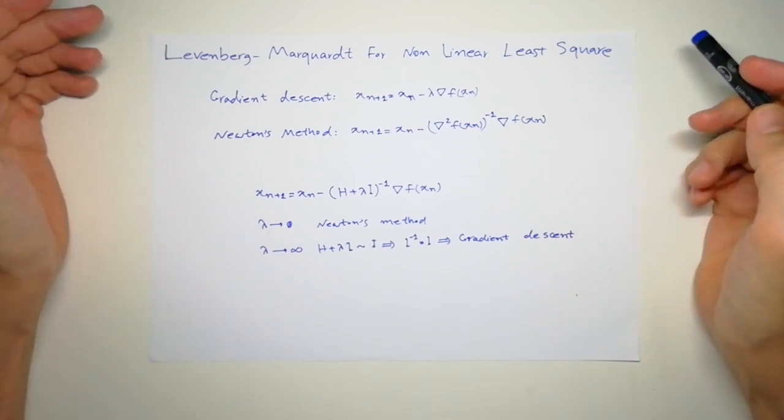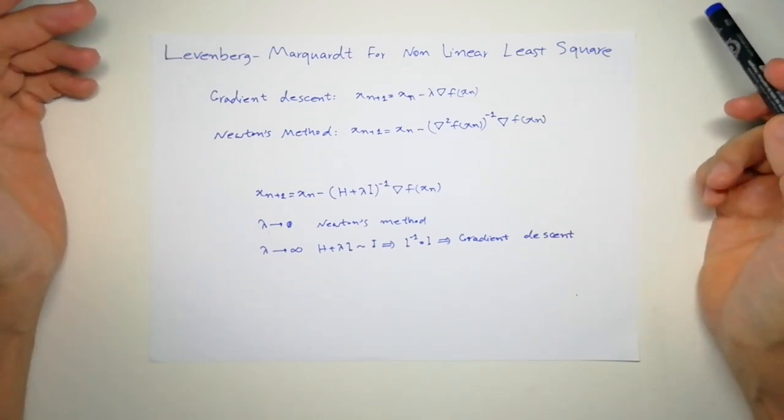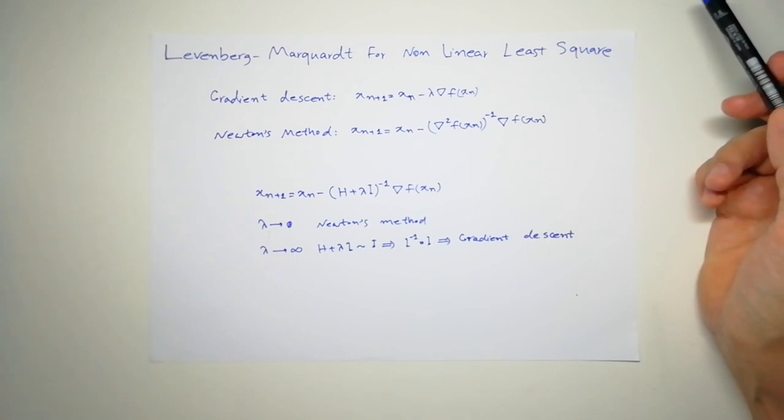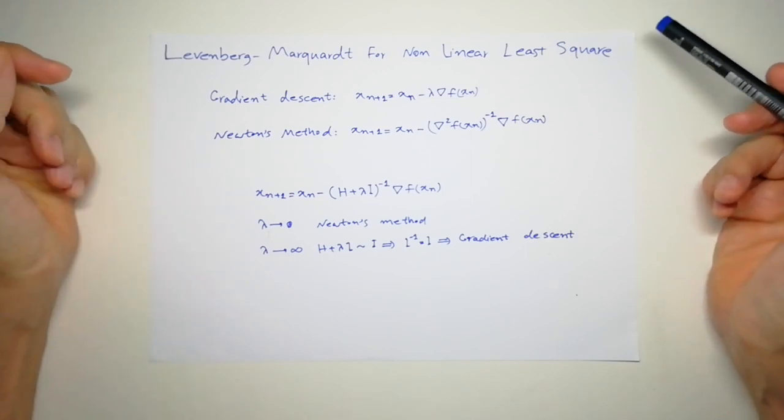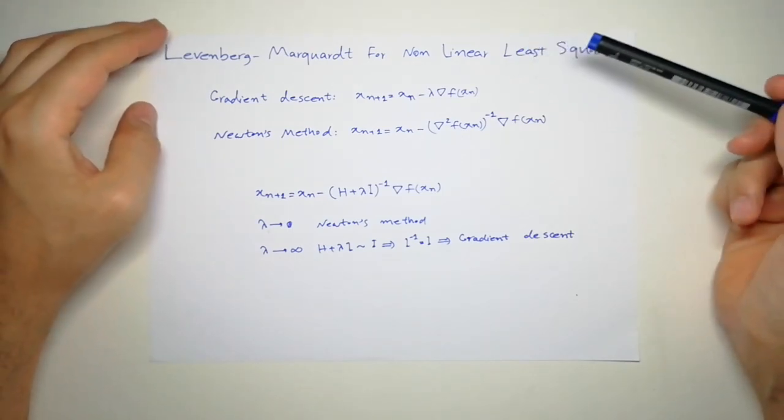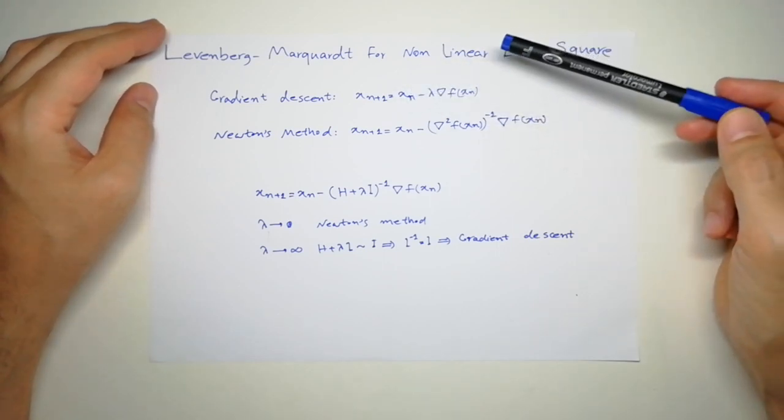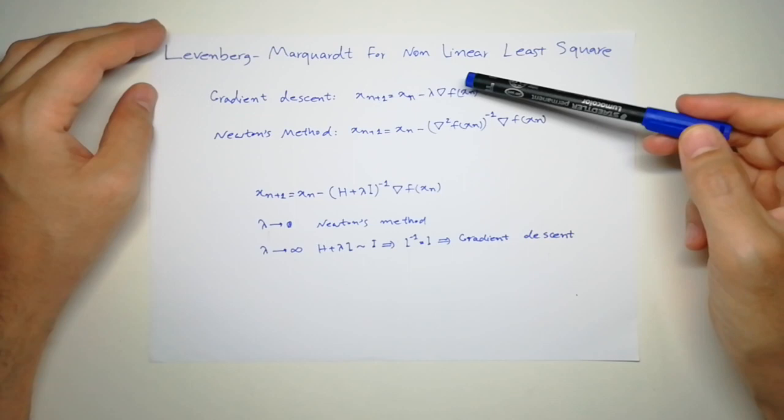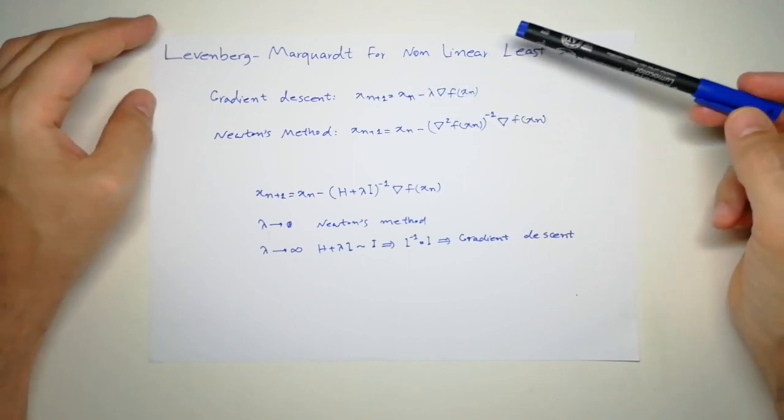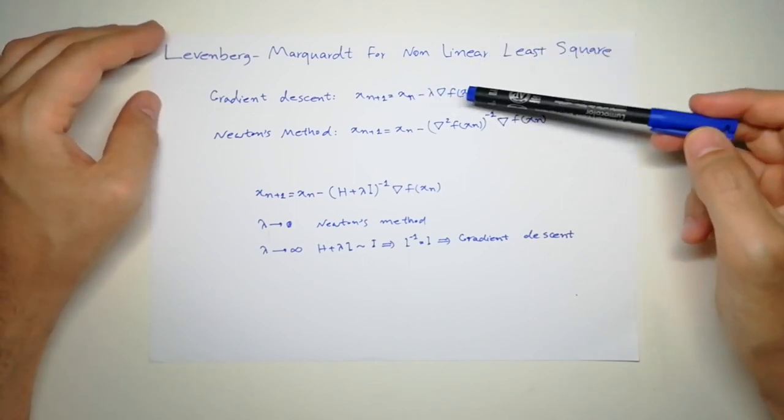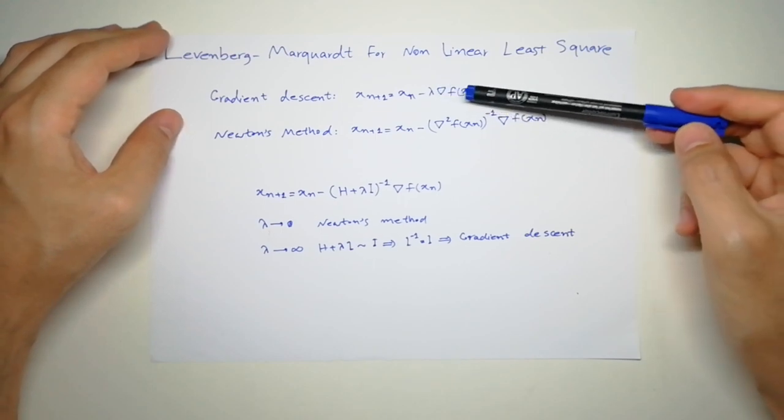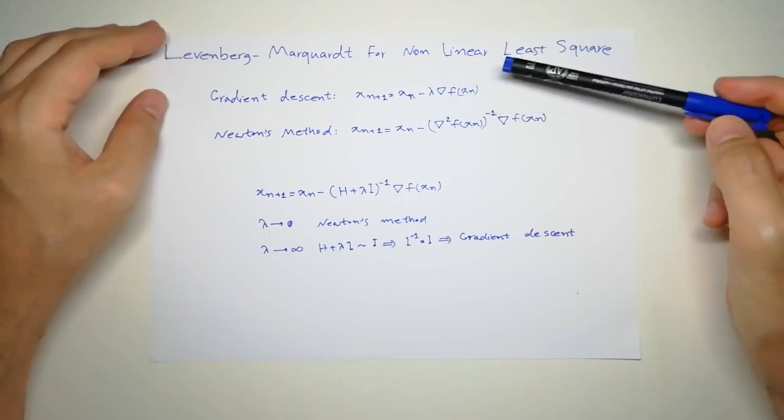Hi, in this video I'm going to talk about the Levenberg algorithm for solving non-linear least square problems. What we had earlier was gradient descent, where you start from a point and the next point is going to be lambda, which is step size, and the gradient of the function.